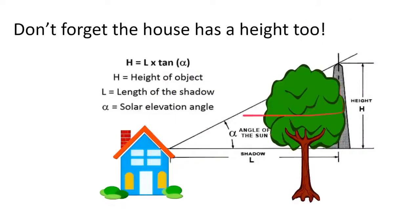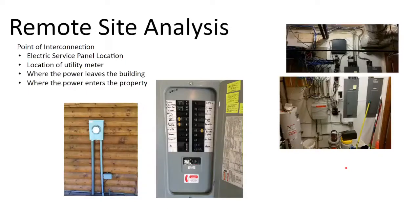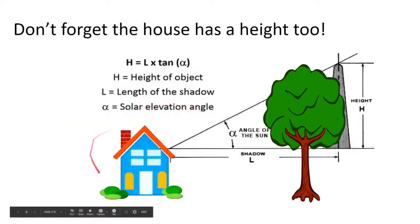If you know the sun is 27 degrees up in the sky and you know the length of the shadow, you can use trigonometry to get the height of the tree. So if you're doing just a ballpark shade analysis and giving yourself plenty of clearance, you can use Google Earth to get estimates of tree heights. When doing that, don't forget to also compare the height of the tree against the height of the house — rooftops are a good 12 feet or more off the ground.